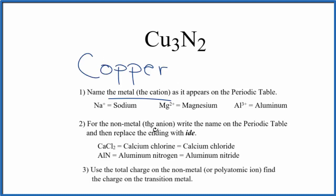Next, we'll write the name for the nonmetal, that's nitrogen, lowercase n. And we're going to replace the ending with ide. So right now, we have copper nitride as the name for Cu3N2.